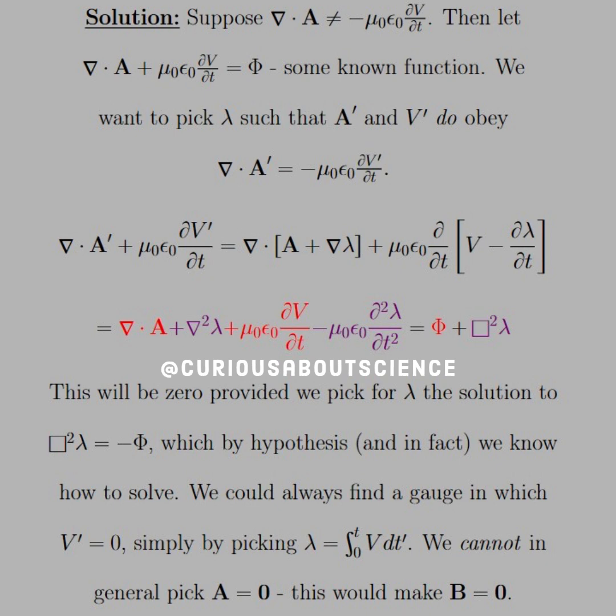So let's dive in. With this, let's first suppose that the divergence of A does not equal the negative mu naught epsilon naught dV/dt. Then what we can say is we have the divergence plus the time derivative is equal to some function phi.